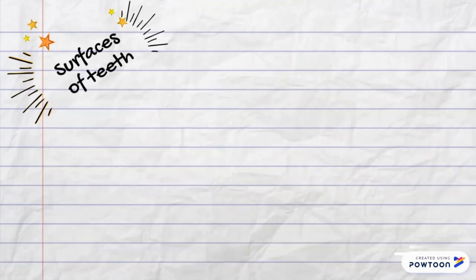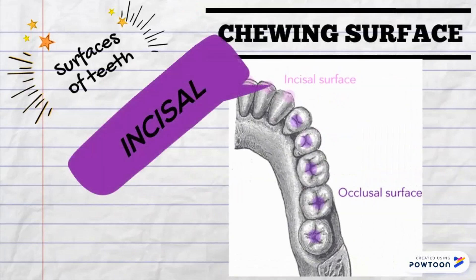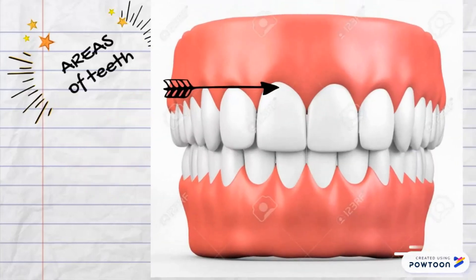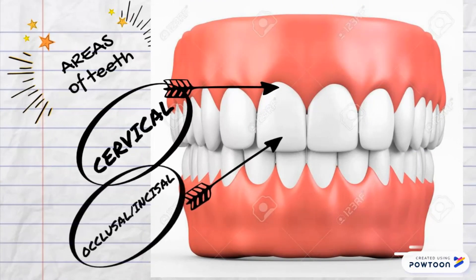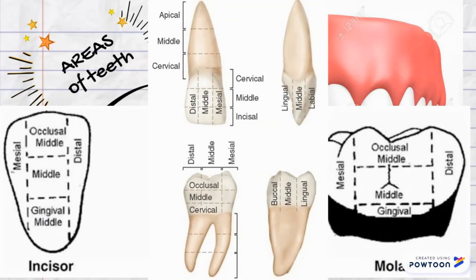Now let's speak about the chewing surfaces, or masticatory surfaces, of teeth. The incisal surface is for the anterior teeth, which are for tearing, and the occlusal surfaces of the posterior teeth are for grinding — both the same for upper and lower. The vertical dimension of a tooth is divided into three sections: cervical, which is the gum line region; middle; and then the occlusal or incisal surface, which we use as the functional surface of the tooth.